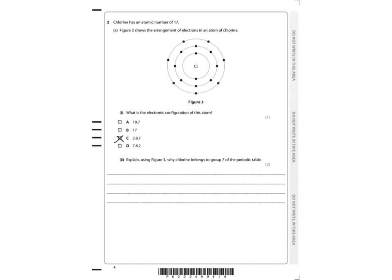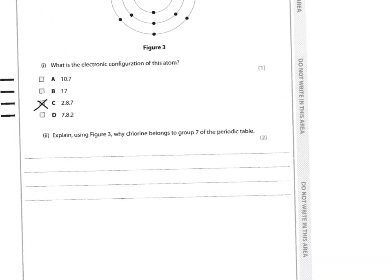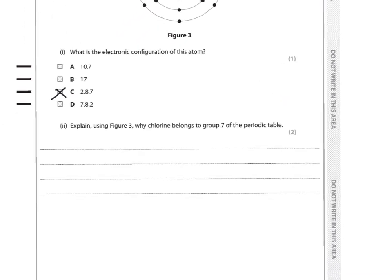It says: explain using figure three why chlorine belongs in group seven of the periodic table. All atoms in group seven have seven electrons in their outer shell. Chlorine has seven electrons in its outer shell — it's the outer shell electrons that determine what group an element is in. Group one has one electron, group two has two electrons in their outer shell, and chlorine in group seven has seven.